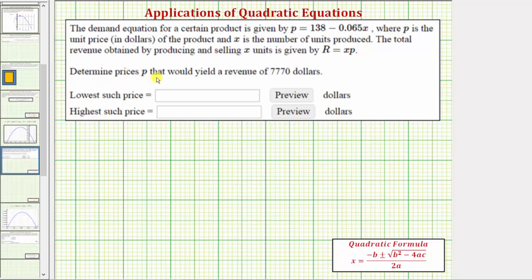We're asked to determine the prices that would yield a revenue of $7,770. So for our first step let's write the revenue function as a function of x. We'll substitute 138 minus 0.065x for p in the revenue equation. So that would give us revenue equals x times 138 minus 0.065x.